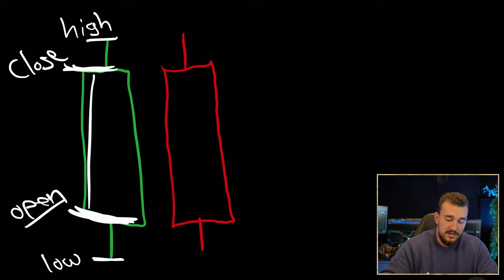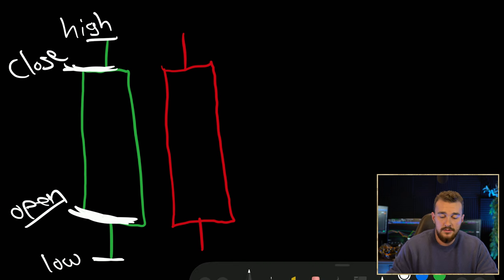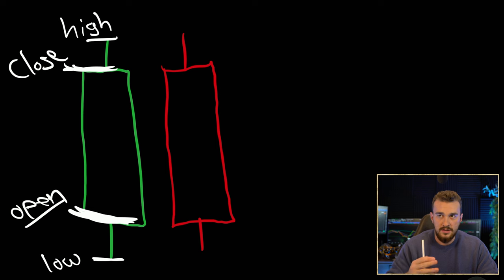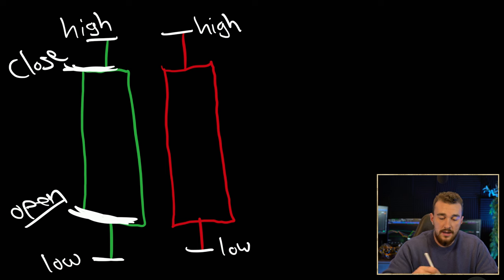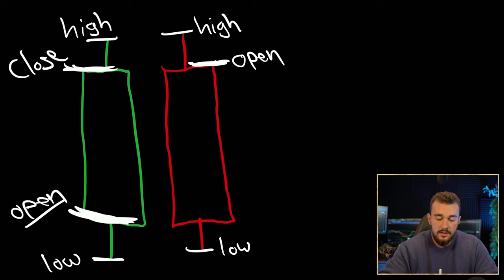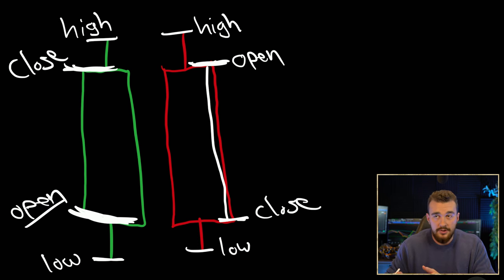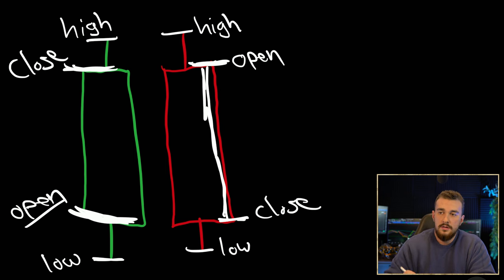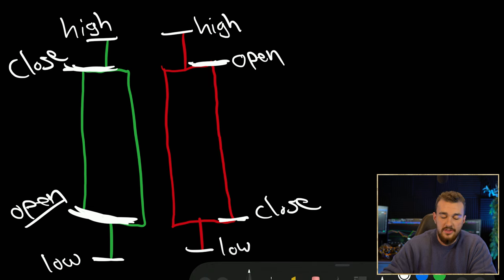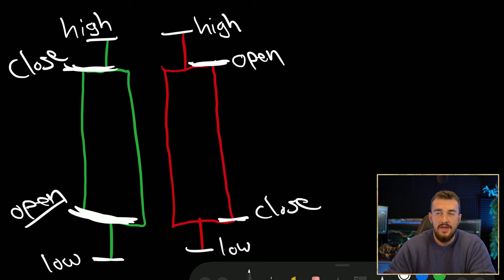The high is the highest price that particular security traded at during that five-minute time frame. The same thing with the low at the bottom wick — that's the lowest price it traded at during that period. In between is the difference between the open and the close. On the red bar, it's very similar but with a variation: the top of the fat piece is the open and the bottom of the fat piece is the close.